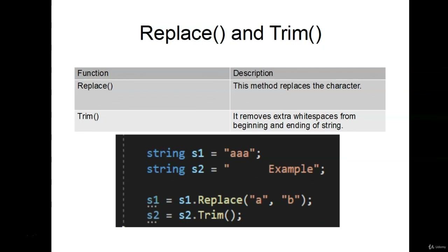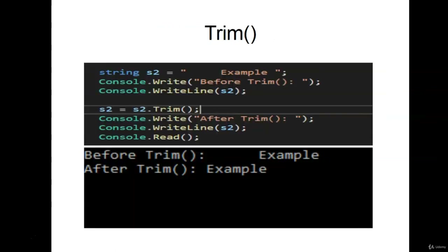The Replace method replaces a character in a string. We have S1 which equals AAA. We take the S1 variable and use the Replace method — you pass two things: the character you're looking for and the character you want to replace it with. Here we look for A and replace with B, so AAA becomes BBB. The Trim method removes all the white space from the beginning and end of a string. We have S2 with white space in front — calling S2.Trim() deletes all the white space from the beginning.